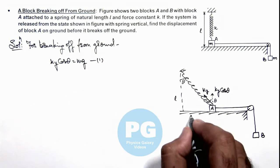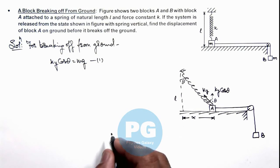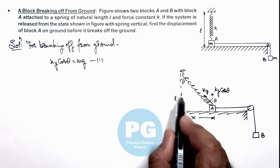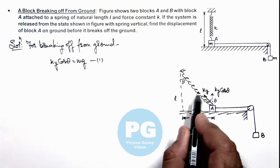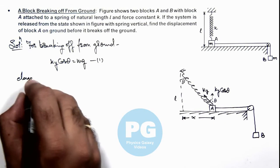And say the block is displaced toward right by a distance x. Then in this situation, this length can be written as l sec theta. So here we can calculate the elongation in spring.